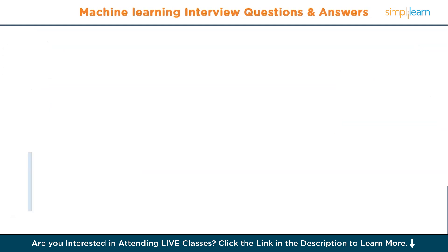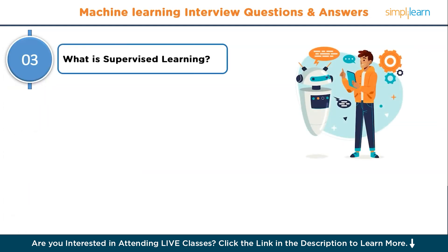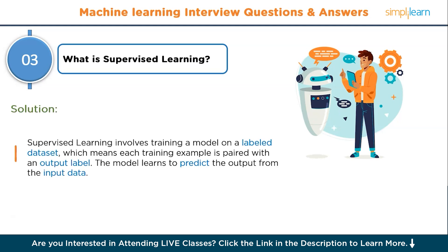Moving to question number three: what is supervised learning? Supervised learning involves training a model on a labeled dataset, which means each training example is paired with an output label. The model learns to predict the output from the input data.